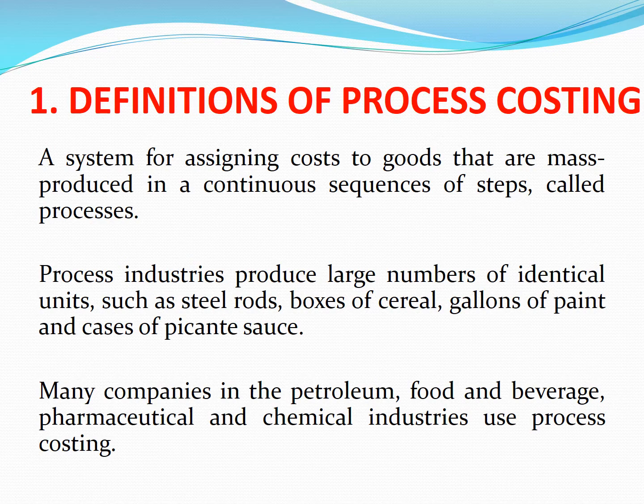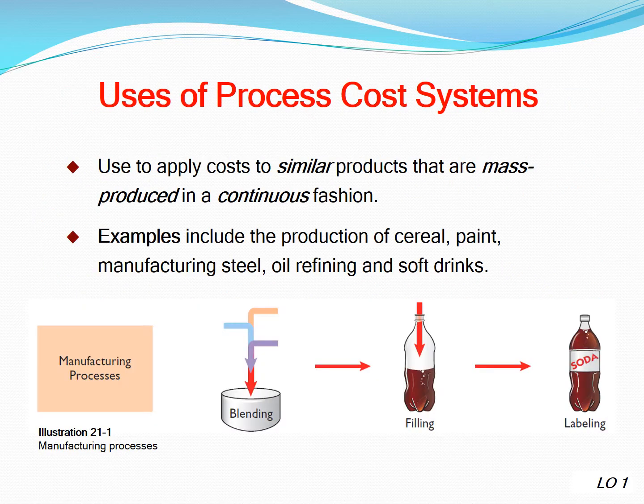One: Definition of process costing. Process costing is a system for assigning costs to goods that are mass produced in a continuous sequence of steps called processes. Process industries produce large numbers of identical units, such as steel rods, boxes of cereal, gallons of paint, and cases of picante sauce. Many companies in the petroleum, food and beverage, pharmaceutical, and chemical industries use process costing.